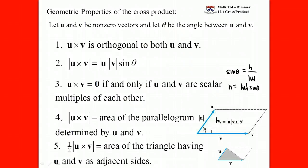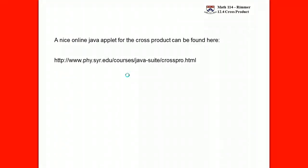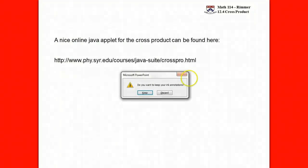So the magnitude of U cross V is the magnitude of U times the magnitude of V times the sine of the angle between the two — and that equals the area of the parallelogram determined by those two vectors. There's also a three-dimensional version: if you take a parallelogram for your base and then have a third vector coming out, those three vectors determine a parallelepiped, and we can figure out the volume of that three-dimensional shape using the cross product. But let me show you a Java applet first.